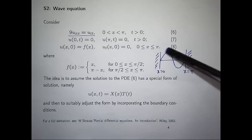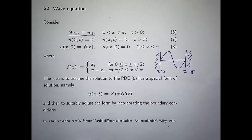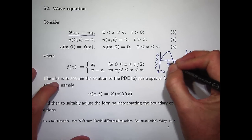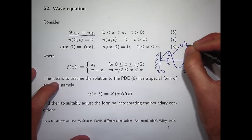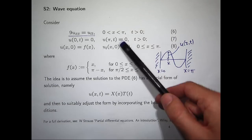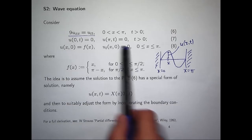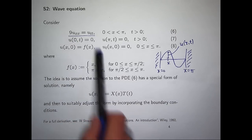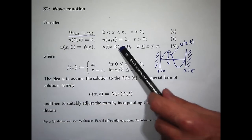Think of this curve here as representing the string at some point in time. u of x comma t measures the displacement of the string above or below its equilibrium position. That distance would be the displacement at the point x at a certain time t, giving a snapshot of the whole string at a certain point in time. The ends are clamped — that's what these two boundary conditions mean. These conditions give the initial displacement and the initial velocity of the string.